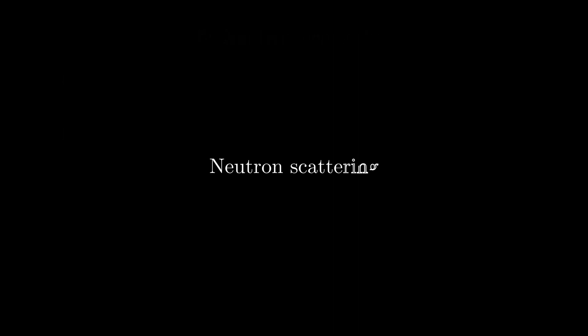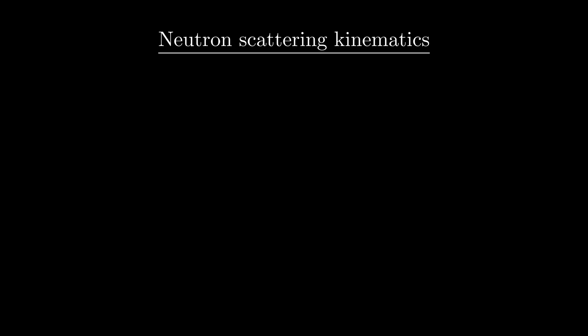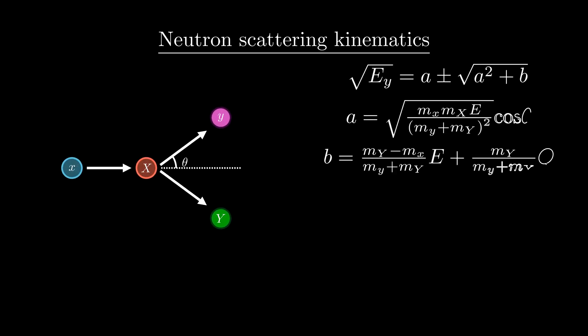To start things off, let's bring back our formula which described the outgoing energy of the light product from a binary nuclear reaction. The square root of the outgoing energy of the light product is equal to a plus or minus the square root of a squared plus b, where a and b are quantities defined in terms of the masses of the reaction participants, the angle at which the light product leaves the reaction relative to its incident path, and the reaction's Q value.